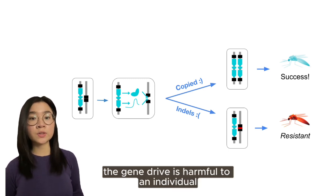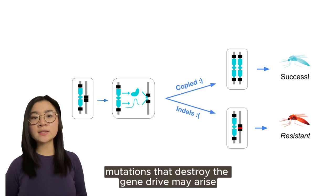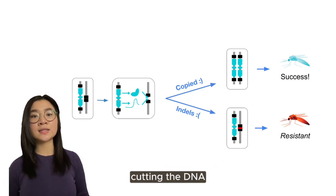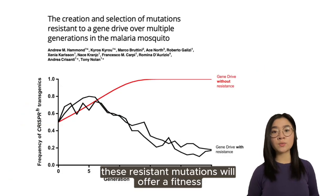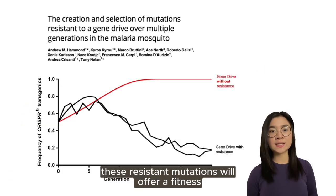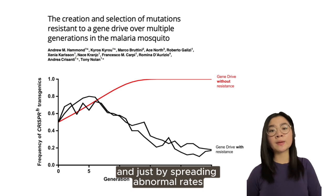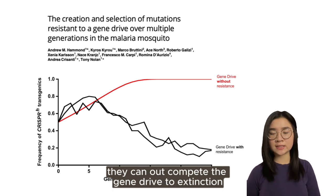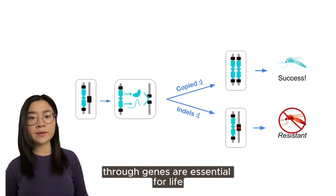Particularly in cases where the gene drive is harmful to an individual, mutations that destroy the gene drive may arise. And with CRISPR-Cas9 genome editing cutting the DNA, this is even more likely. These resistant mutations will offer a fitness advantage in the face of the gene drive, and by spreading at abnormal rates, they can out-compete the gene drive to extinction. One method to prevent resistant alleles is to drive through genes that are essential for life.